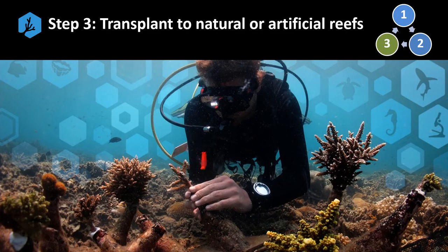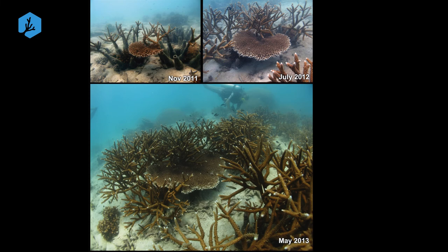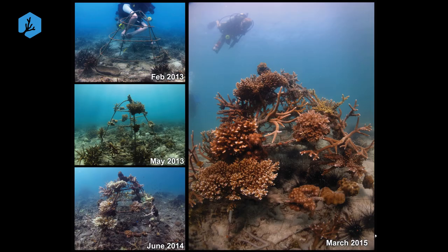The last step, transplanting the corals, is probably one of the more difficult steps in the entire process and will be covered in depth in a subsequent video. In our programs, both natural and artificial substrates are utilized depending on the needs of the particular area. For example, in this area that had been reduced to sand due to anchor dropping over many years, our bottle units proved very effective after being filled with corals from our platform nurseries nearby. In this next example, corals growing on the rope nurseries were easily moved onto a metal structure and quickly established themselves to provide habitat for a wide diversity of reef fishes and other organisms.